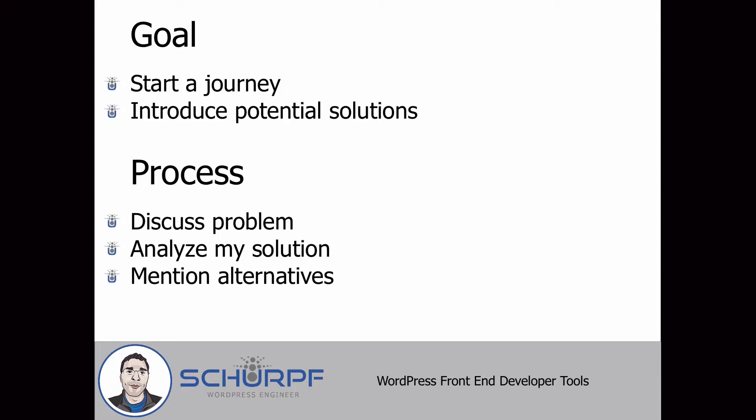The process we're going to follow always has three steps: first, we discuss a general problem; then we quickly analyze the solution — though I won't have time to go into too much detail; and then we'll also quickly touch on alternatives, because there are always several and it's important to at least be aware of them.